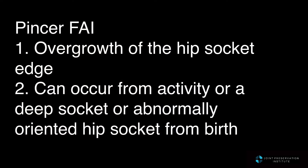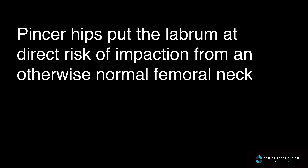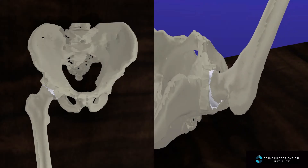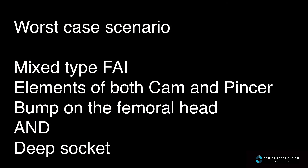Pincer FAI occurs from overgrowth of the hip socket edge. This can occur from activity or from a deep socket or abnormally oriented hip socket from birth. In this portion of the animation, we can see the enlargement and extension of the hip socket outward. In pincer FAI, the hip labrum is put at direct risk of impaction from an otherwise normal femoral neck. As the hip bends upward, we can see that the edge of the socket restricts the motion.